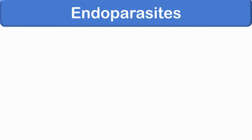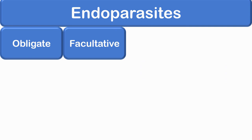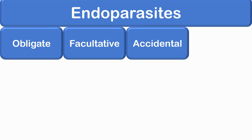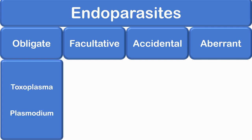The endoparasites can be further classified as obligate, facultative, accidental, and aberrant. An obligate parasite is one that cannot exist without a host — for example, Toxoplasma gondii and Plasmodium species.